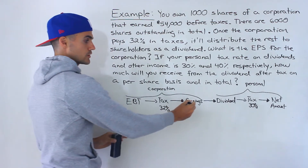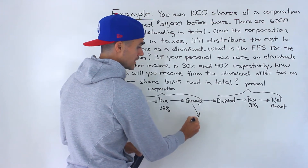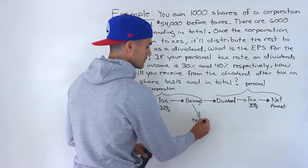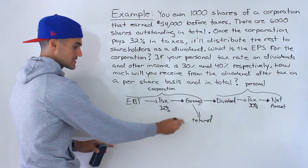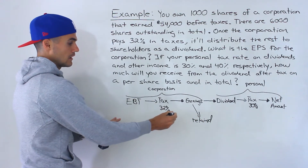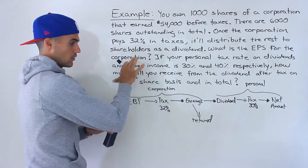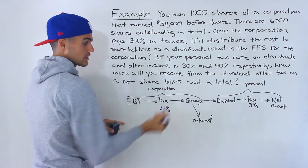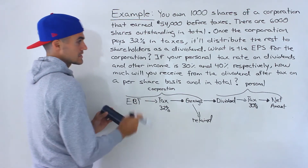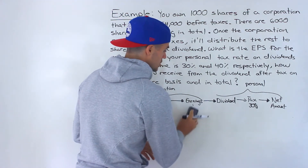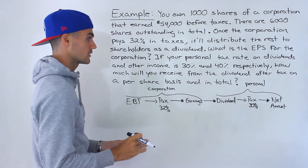In reality, usually all of the earnings aren't being paid out as a dividend — a portion is being retained in the company. Those retained earnings get reinvested back into the company, and hopefully that increases sales or decreases costs, so earnings increase. In this case though, there are no retained earnings; it's all being paid out as dividends. So that's what's happening from a higher level before we get into the calculations.